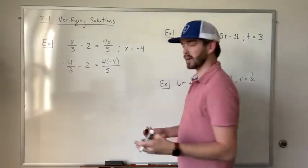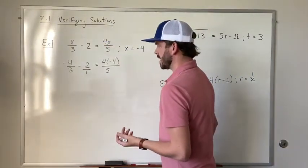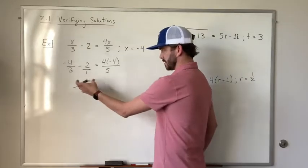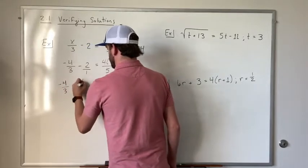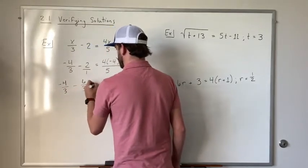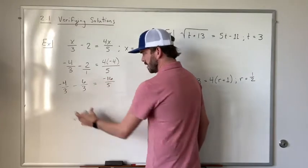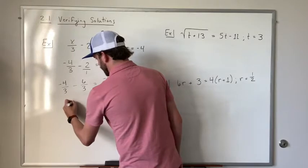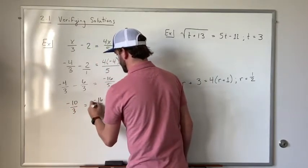All right, so now we need to simplify this. Turn this into a fraction. And we're going to find a common denominator and then combine these fractions. So we have negative 4 thirds minus 6 thirds. We can go ahead and do this on this side. 16 over 5. Negative 4 thirds minus 6 thirds is going to give us negative 10 thirds is equal to negative 16 fifths.